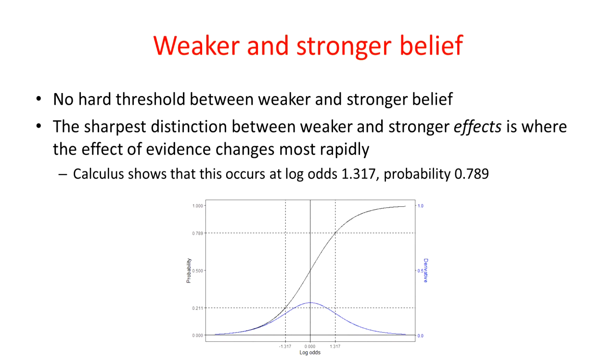But we could say, where does the effect of evidence change most rapidly? And that will be the sharpest distinction between weaker and stronger effects of evidence. And because we've made a correspondence between effects of evidence and belief, we can say that the sharpest distinction between weaker and stronger belief is where the effect of evidence is changing most rapidly. And that's shown by the dotted lines on the graph. That's where the effect of evidence, the blue curve, is changing most rapidly. That turns out to be at log odds of 1.317 or a probability of 0.789, just under 80%.